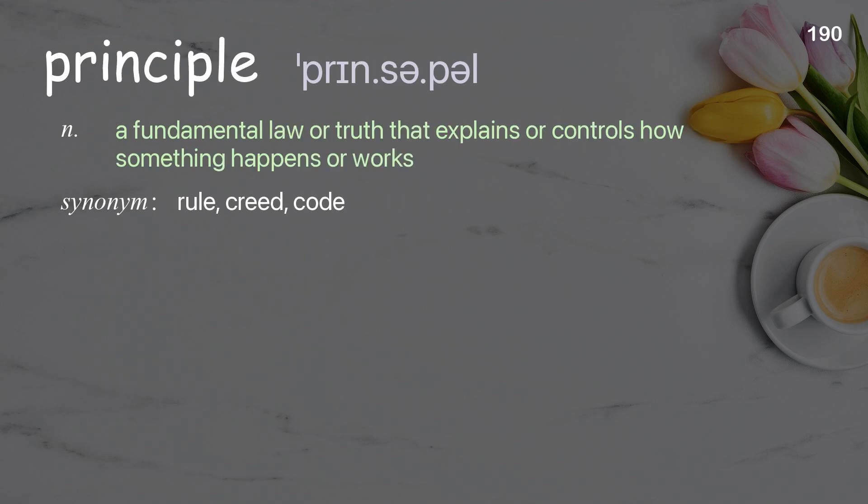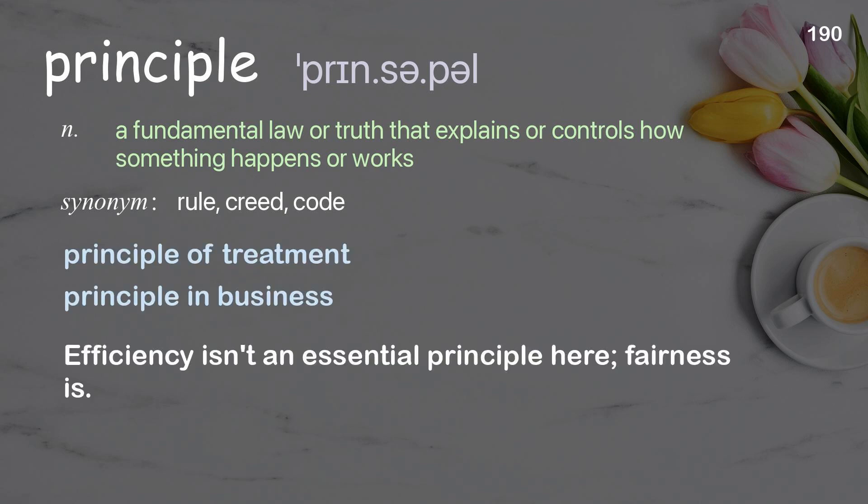Principle: a fundamental law or truth that explains or controls how something happens or works. Examples: principle of treatment; principle in business. Efficiency isn't an essential principle here — fairness is.